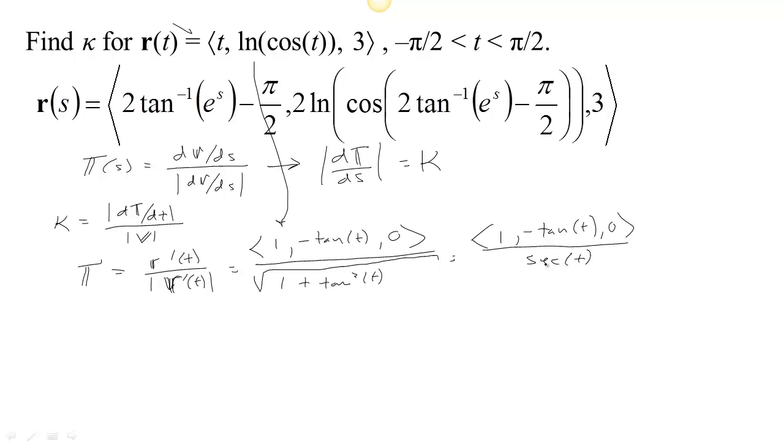So we have, this is 1 over cosine in the denominator. If you multiply top and bottom by cosine, then we get, let's see, cosine times 1 is cos t, and minus tan t times cos t is minus sin t, and 0 times cos t is still 0. There we go, we've got our unit tangent.